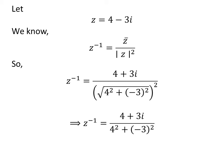Above implies, multiplicative inverse of z is equal to 4 plus 3 times i upon square of 4 plus square of minus 3.